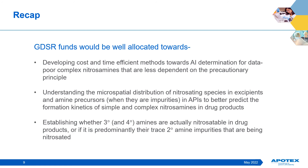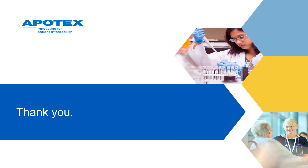To sum up the points I've presented today, GDSR funds would be well-allocated towards: first, developing cost and time-efficient methods for AI determination for data-poor complex nitrosamines as a valid alternative to the precautionary principle-governed standard read-across approach; second, understanding the microspatial distribution and mobility of nitrosating species in excipients and amine precursors in APIs to better predict the formation kinetics of simple and complex nitrosamines in drug products; and finally, establishing whether tertiary and quaternary amines are nitrosatable in drug products to any meaningful extent, or if it is predominantly their trace secondary amine impurities that are being nitrosated. I hope you have found these points useful and I look forward to the panel discussion to follow. Thank you for your attention.